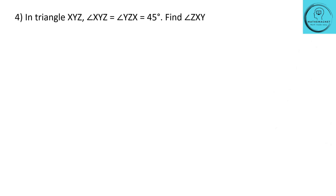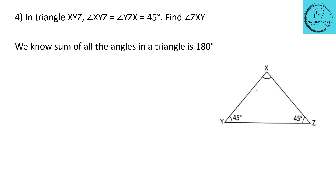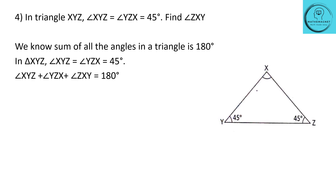Question 4: in triangle XYZ, angle XYZ equals angle YZX equals 45 degrees. We know the sum of all angles in a triangle is 180 degrees. So angle XYZ plus angle YZX plus angle ZXY equals 180 degrees. The unknown angle ZXY equals 180 minus 45 minus 45 degrees, which is equal to 90 degrees. So the unknown angle ZXY is equal to 90 degrees.